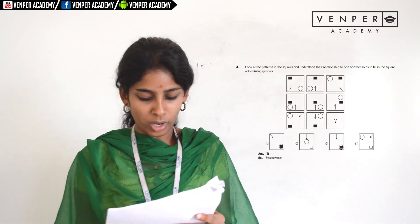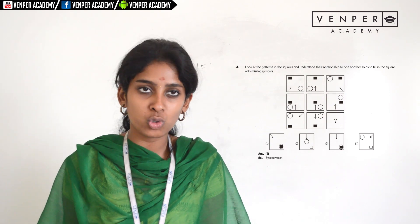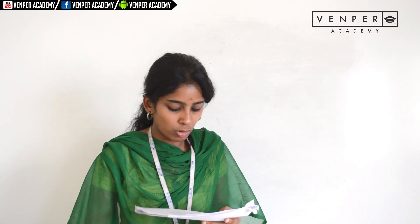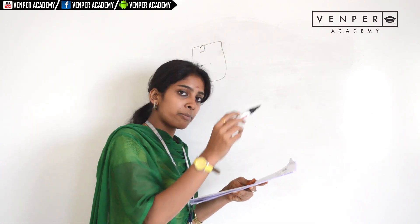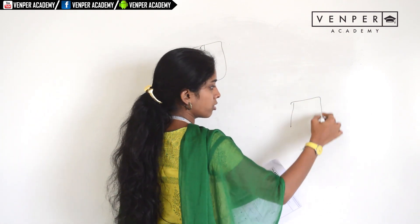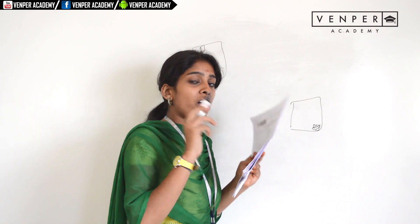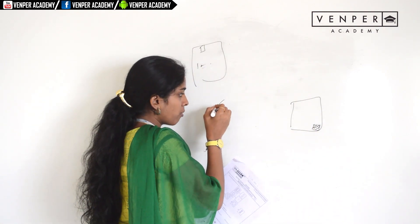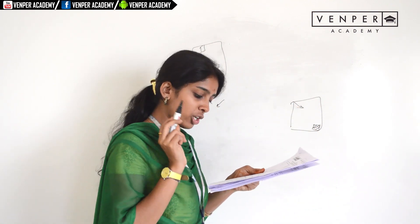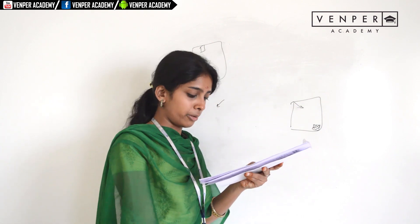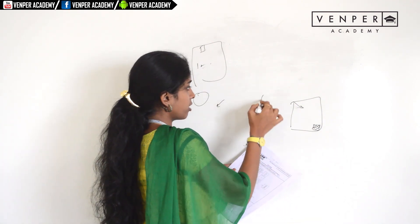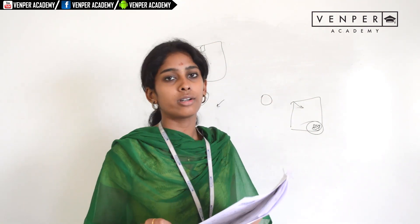Question three: look at the patterns in the square and understand the relationships. In the first row, all the shaded small squares are in the same row — for example, all shaded boxes in the first square are at the top, in the second row they are in the middle, and in the third row they will be in the corner. The arrow marks in the first and third rows are at the corners. The circles also follow a pattern — two circles are in the same row and the third is in the opposite position. By observation, the answer is option one.